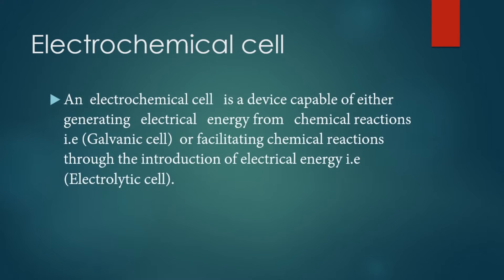Basically, there are two types of electrochemical cells: the galvanic or voltaic cell, and the electrolytic cell. An electrochemical cell is a device capable of generating electrical energy from chemical reactions, or facilitating chemical reactions through the introduction of electrical energy.